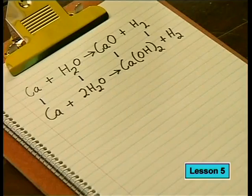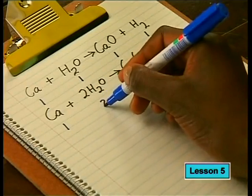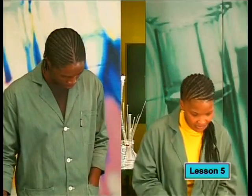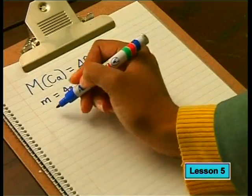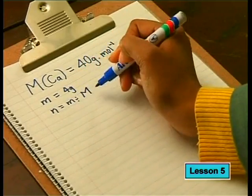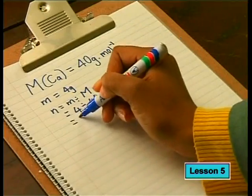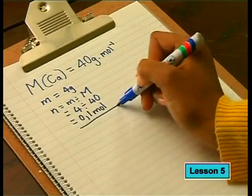In our experiment we also have to make sure we put enough water for the calcium to react completely. Before we can find out how much water we'll need, we first need to calculate the number of moles in our measured-out calcium sample. The relative atomic mass of calcium is 40 and the mass of the sample is 4 grams. Using the equation n = m ÷ M and substituting in the values, we find that we have 0.1 moles of calcium in the sample.